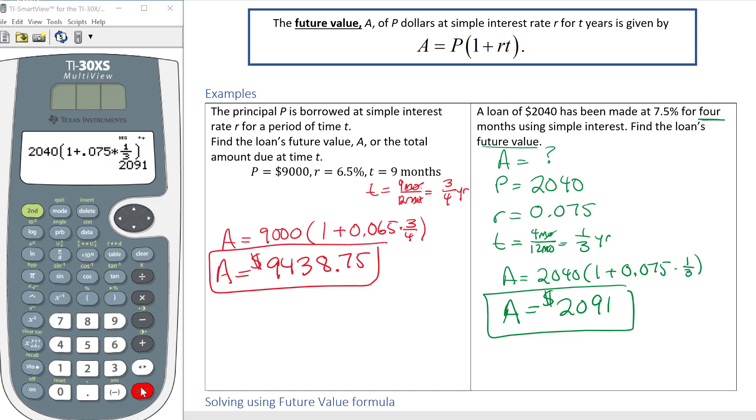So if you're the one loaning out the money, that's how much you'll get back after they've accrued the interest. If you're the one taking out the loan, well then that's how much you're going to have to pay after four months.